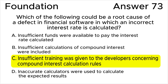Insufficient training was given to the developers concerning compound interest calculation rules. This results in incorrectly writing code due to a misunderstanding of the rules as the root cause. All the rest of the answers are wrong.